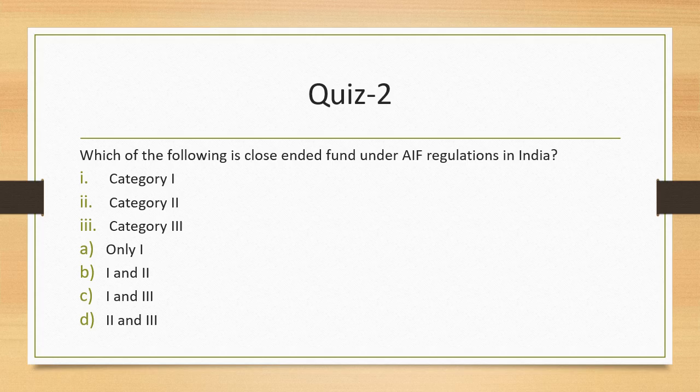Question 2: Which of the following is a close-ended fund under AIF regulations in India? We have three broad categories of AIFs — category 1, category 2, and category 3. Category 1 and category 2 are basically under the close-ended fund category, so we will select that option. Category 3 is an open-ended fund.